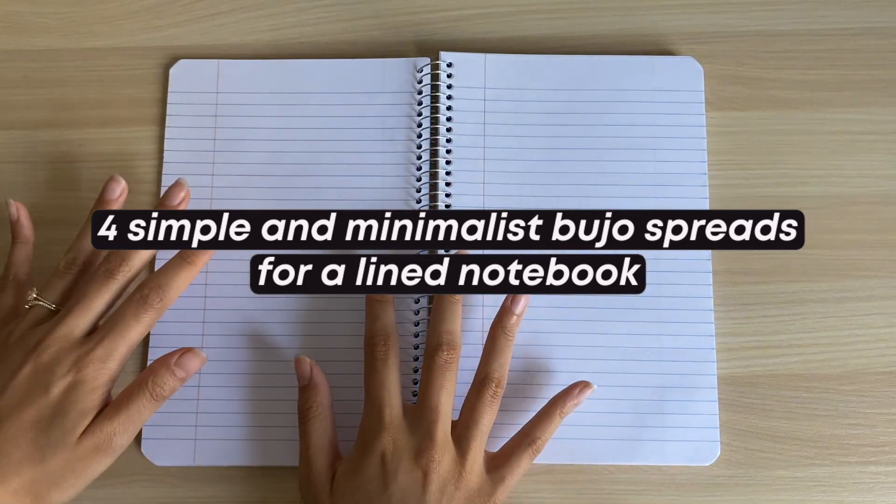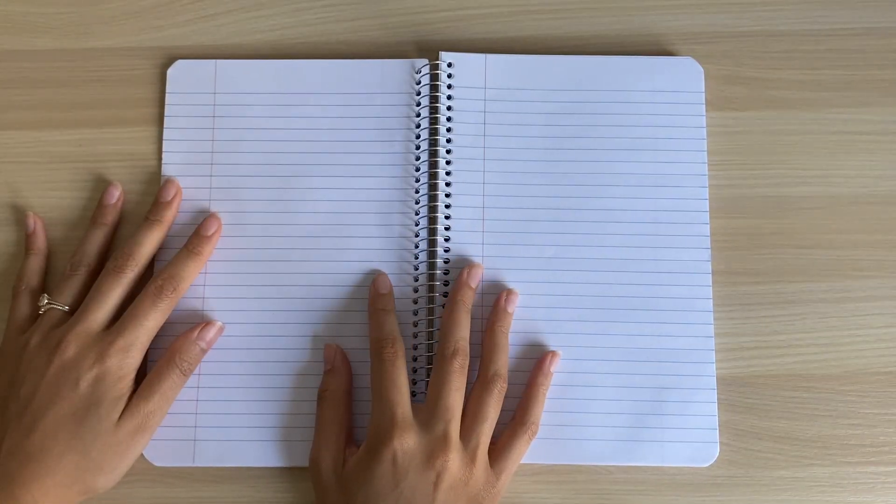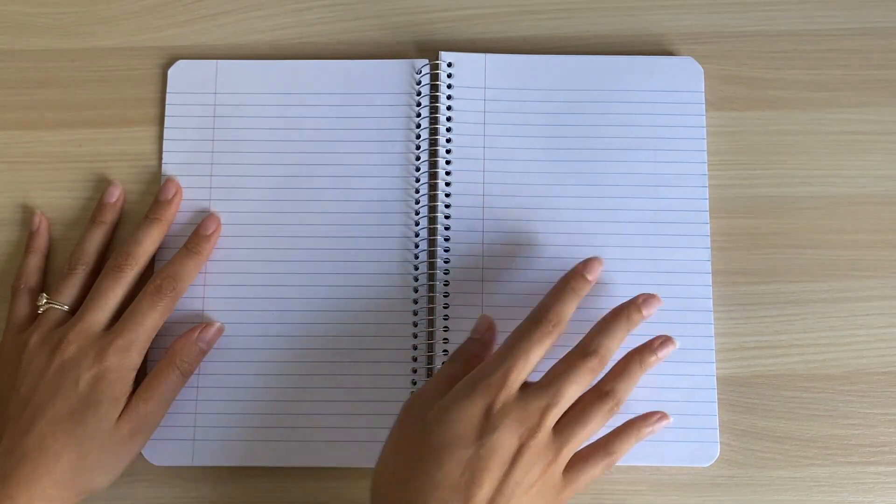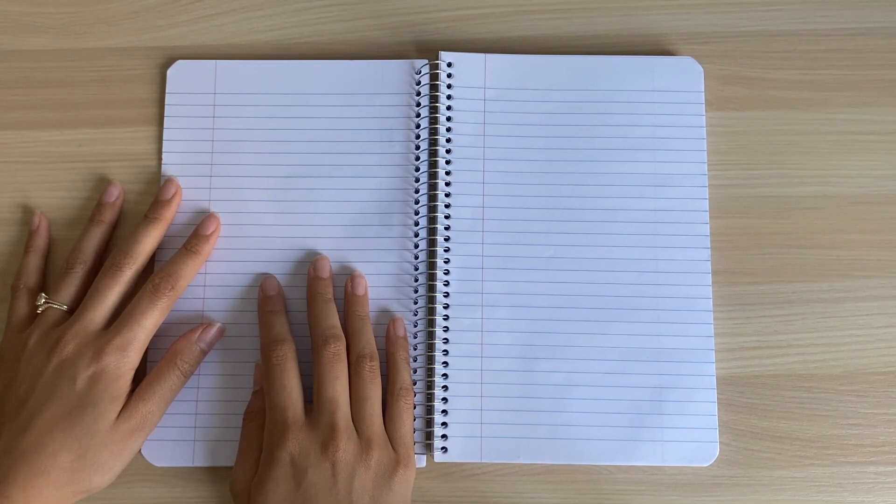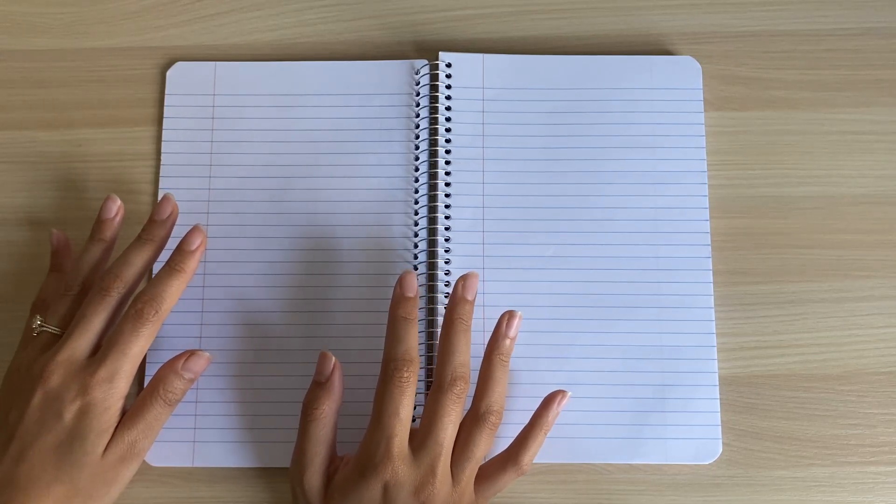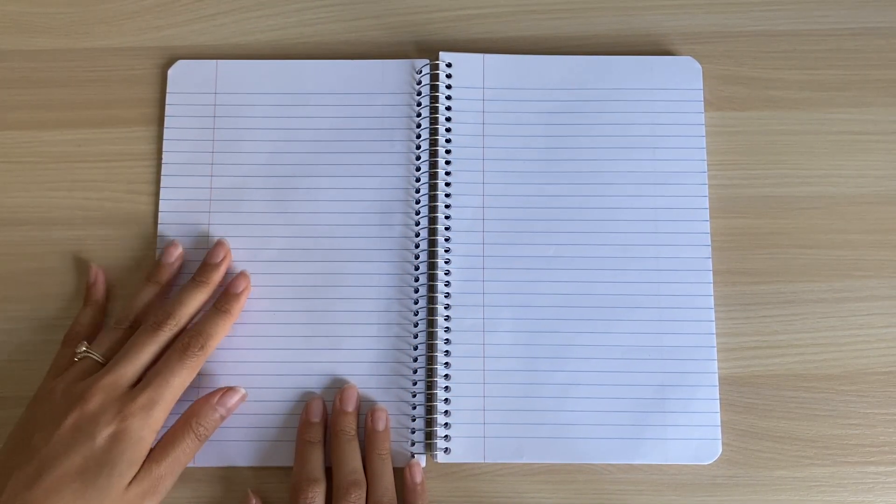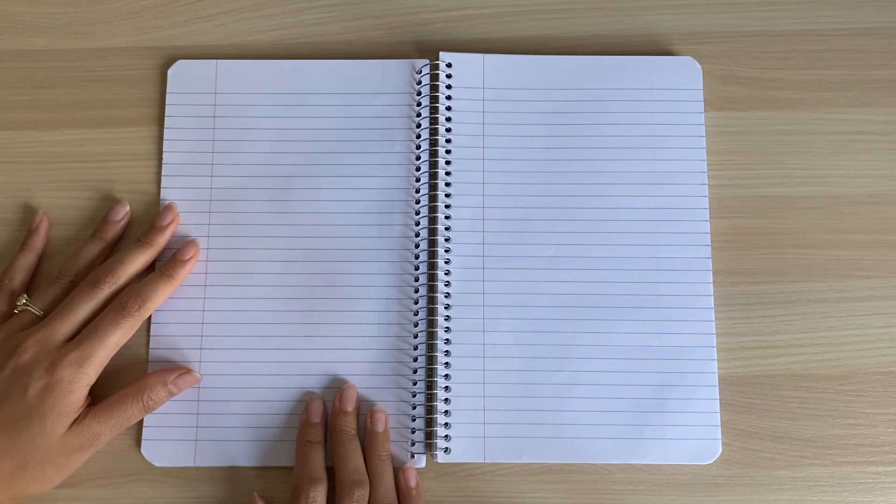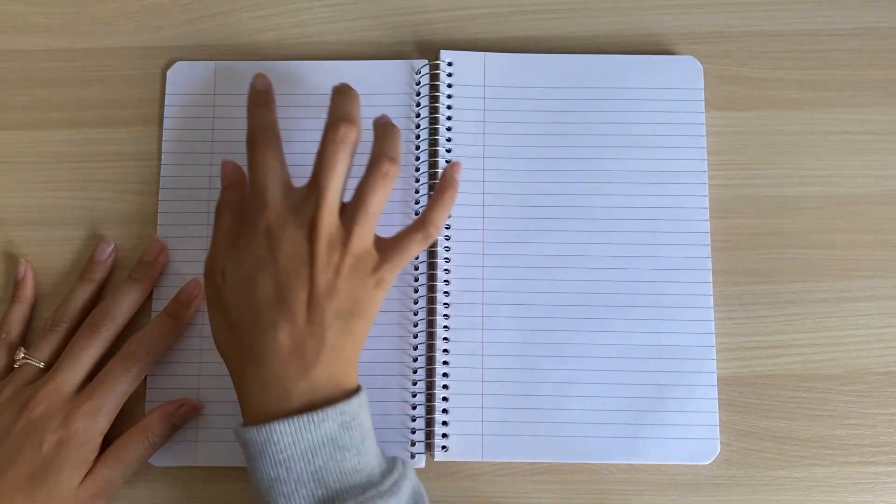For this video today, I'm here to share with you four simple, minimalist, and practical bullet journal spread ideas for your bullet journal, specifically in a lined notebook. The first spread we're going to do is a meal planning spread. This will take up two pages. I'm going to divide each page into four sections. Seven of those eight sections will represent seven days of the week, and then the last section will be an area for you to brainstorm a grocery list.